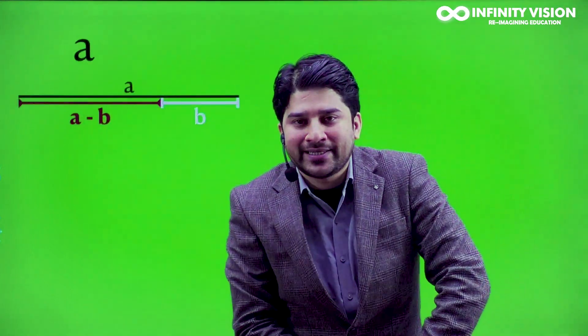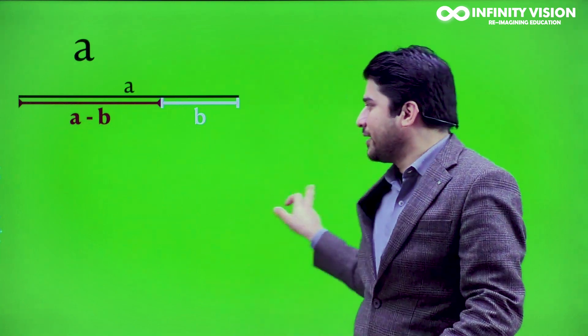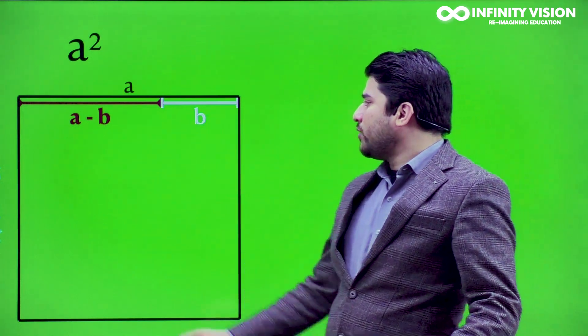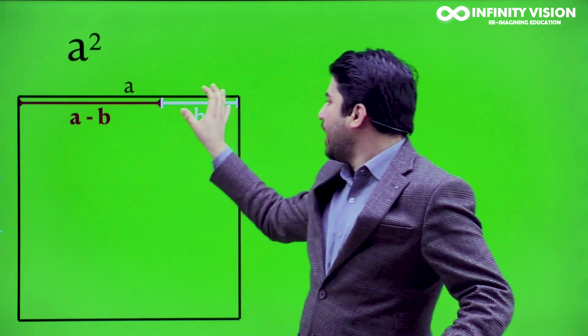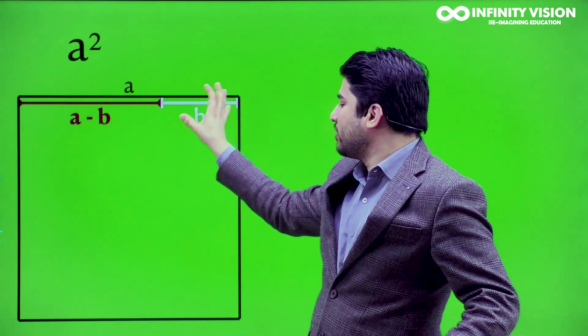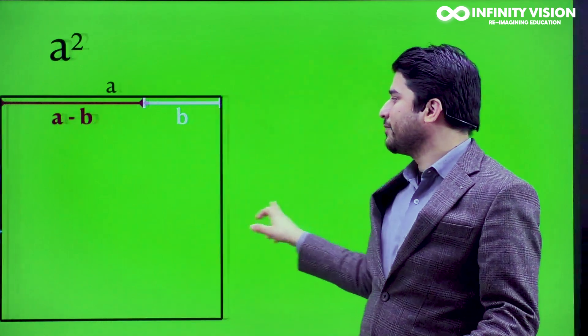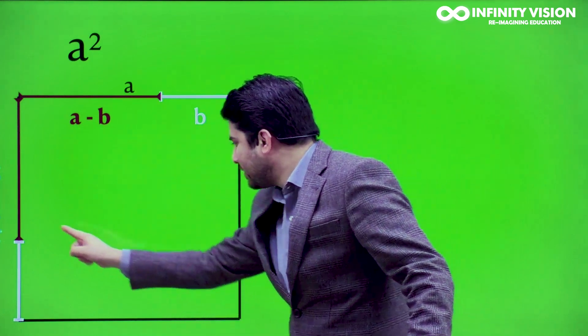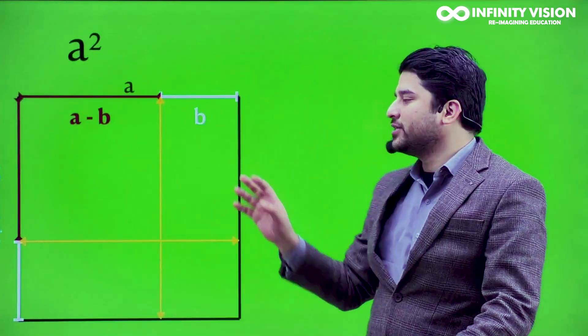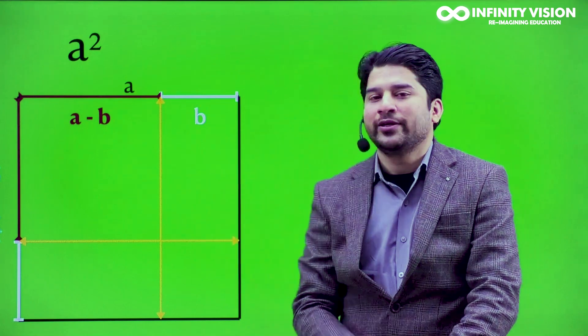Now I want you to visualize a square of side a by a, something like this. The area of this square is side into side, that is a into a, which is a squared. Now I want you to project this horizontal red line onto this vertical length and this horizontal white line onto this vertical side, something like this. Then join this junction and this junction, something like this — which means you have broken the complete area of the square into four regions.